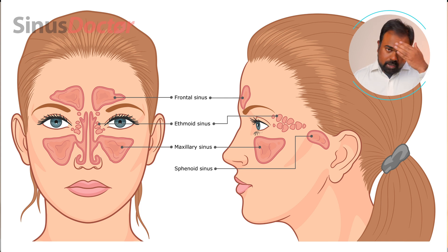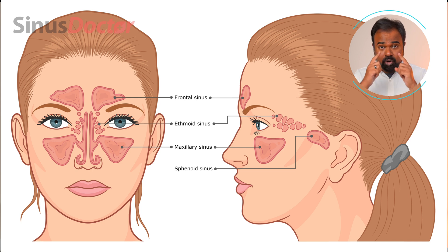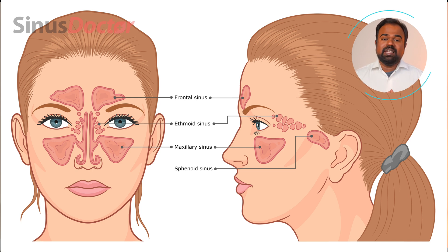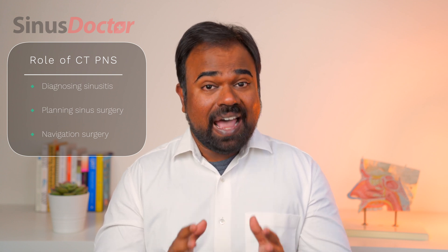The sinuses are air pockets present behind the skull. For example, the frontal sinuses are present behind the thick frontal bone just above our eyebrows. The maxillary sinuses are present behind the cheekbone. The ethmoid sinuses and the sphenoid sinuses are large sinuses present very deeply in the skull. So how do you visualize what is happening within the sinuses? The only way is to use a CT scan. CTPNS not only helps in diagnosing sinusitis, but it helps your sinus surgeon plan his surgery.